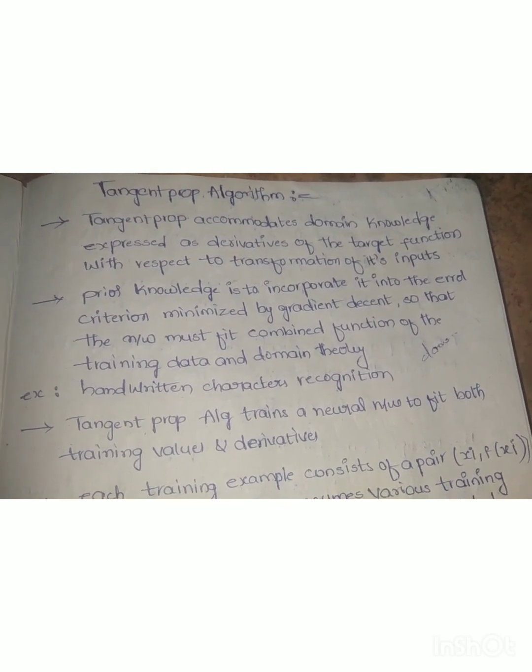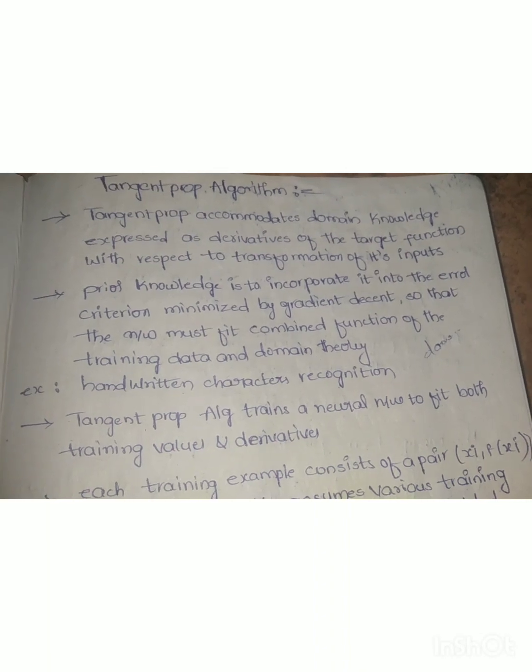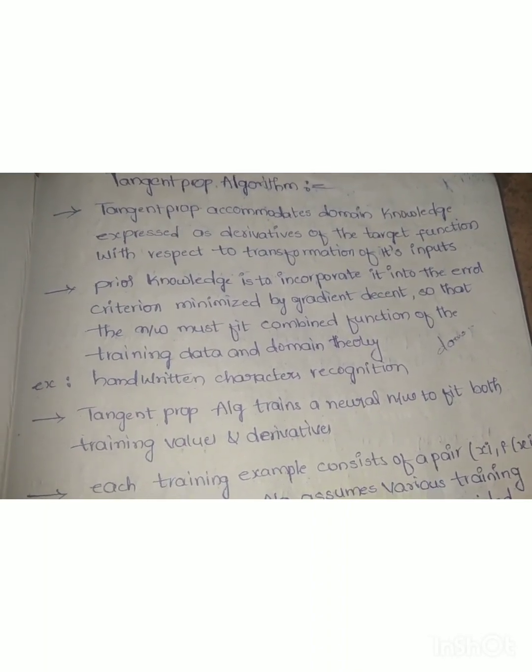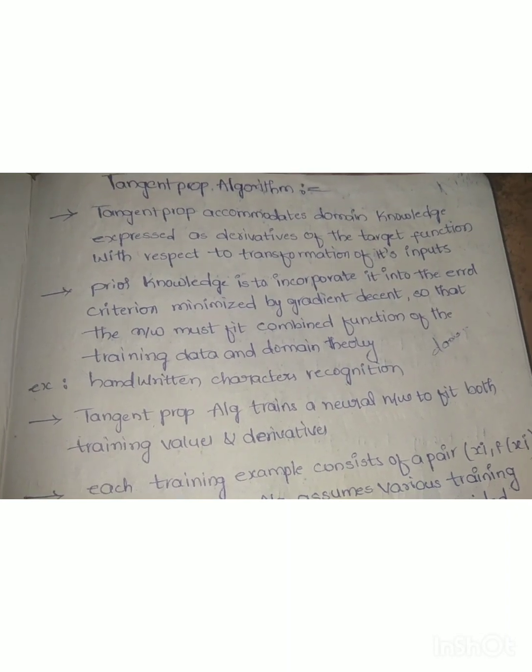Tangent prop algorithm accommodates domain knowledge expressed as derivatives of the target function with respect to the transformation of its inputs.